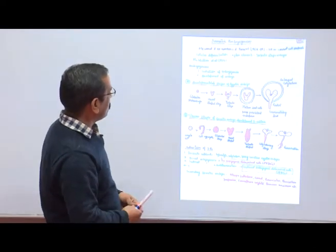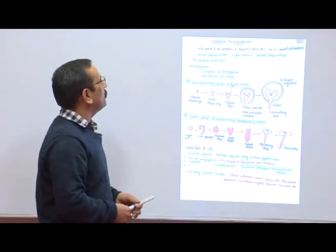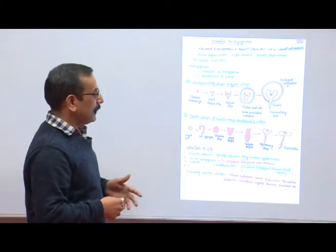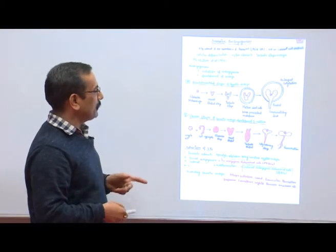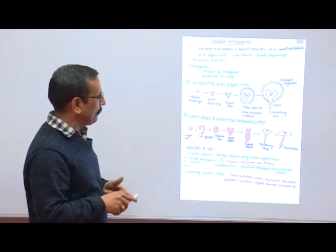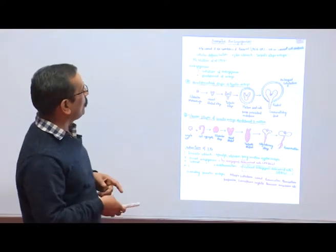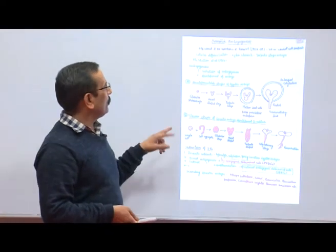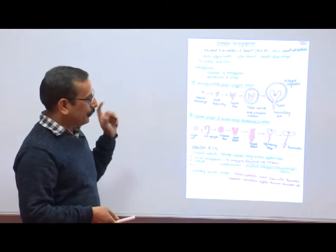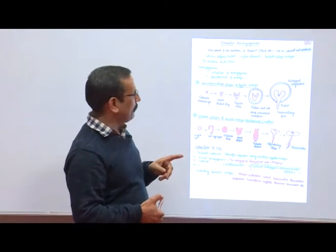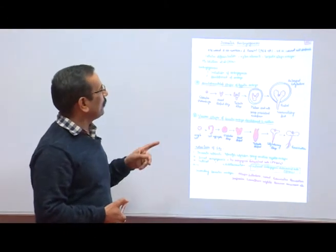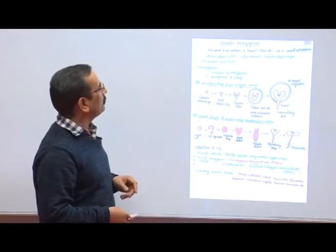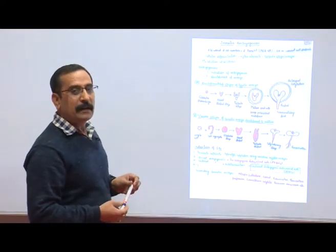In somatic embryogenesis, embryogenesis is of two types: zygotic embryo and somatic embryo. Non-zygotic embryogenesis has three types: somatic embryogenesis, endogenesis, and parthenogenesis.